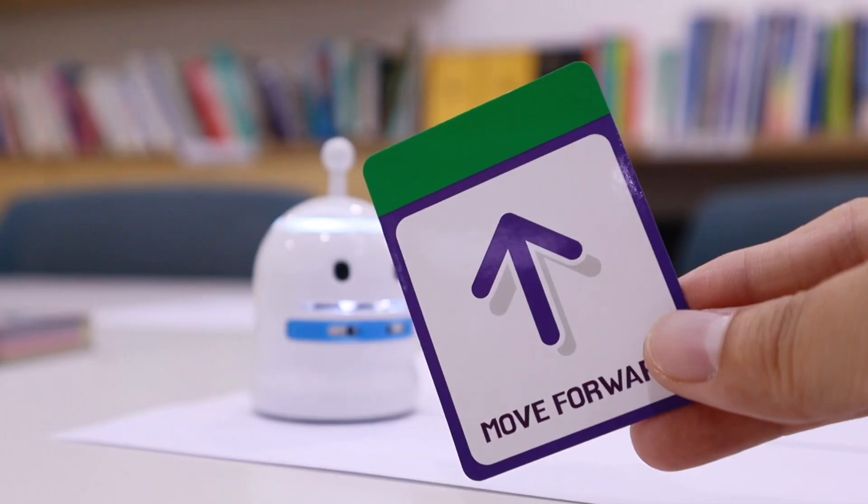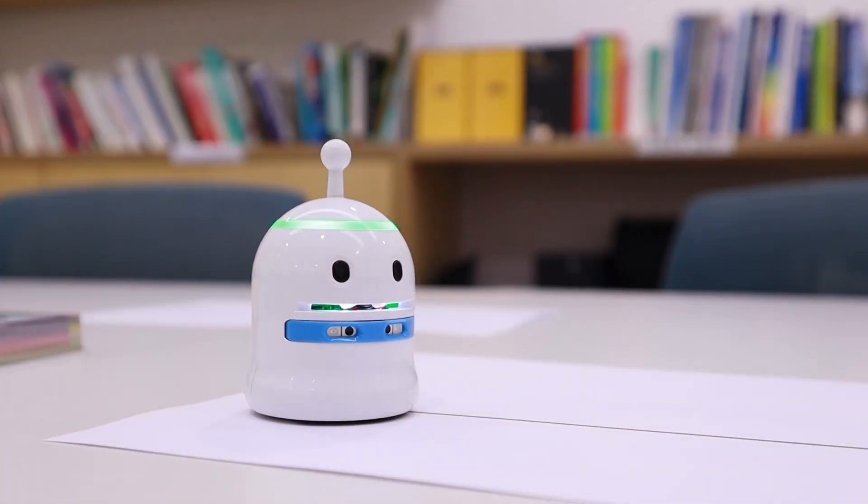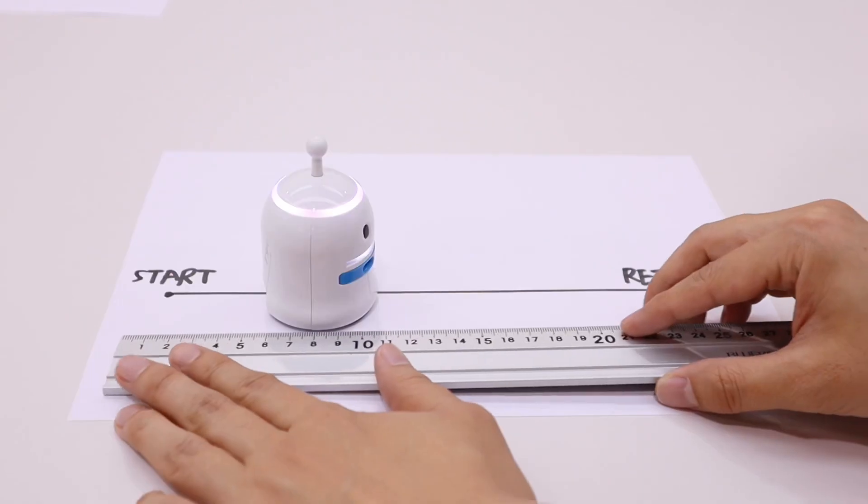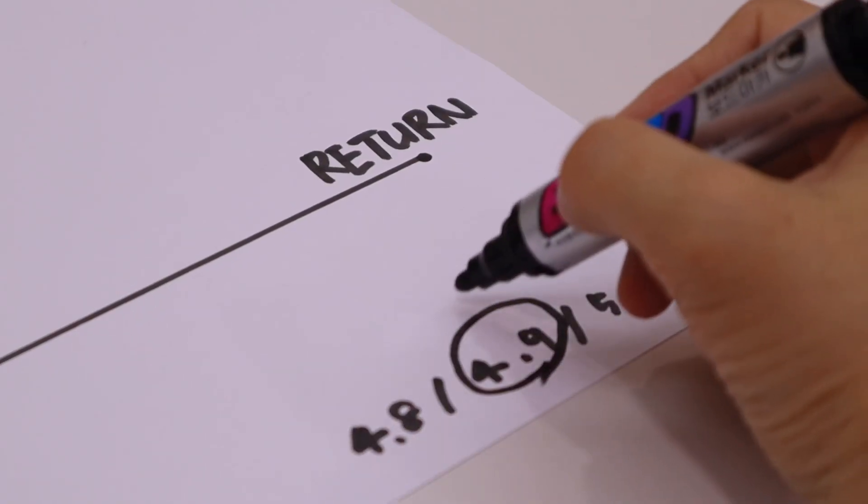Insert the start, move forward, and end card into the robot's mouth. When the command is finished, check how far the robot has moved. Repeat this process several times to get the average distance.